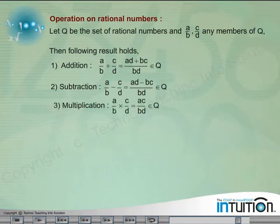Multiplication: A by B into C by D is equal to AC by BD belongs to Q.